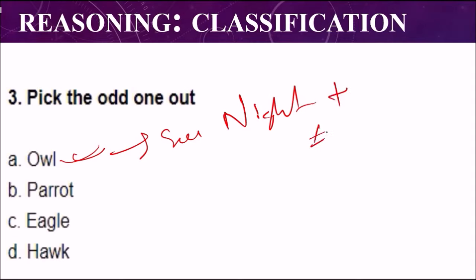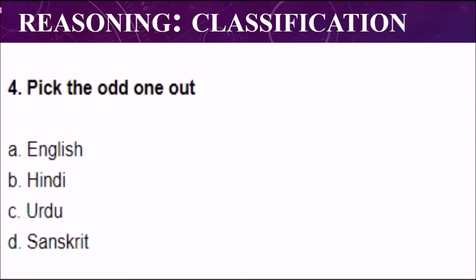This is your question number four: pick the odd one out. The correct answer is option C, that is Urdu. All the other languages except Urdu are written from left to right.